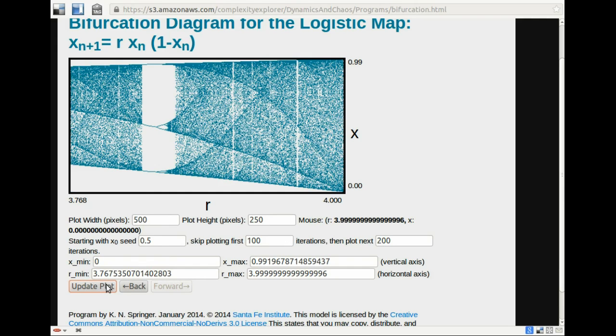So let me zoom in. 3.9, where is that? That looks to be around here. I want 3.906. So let me try zooming in here.